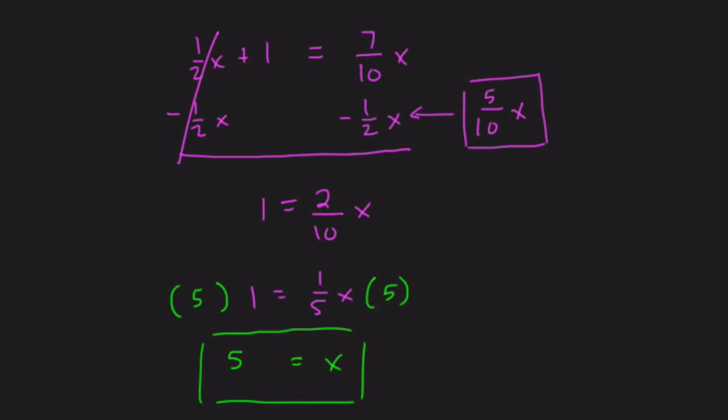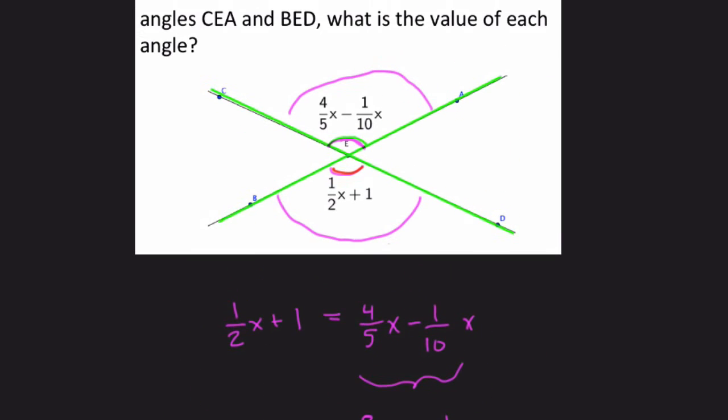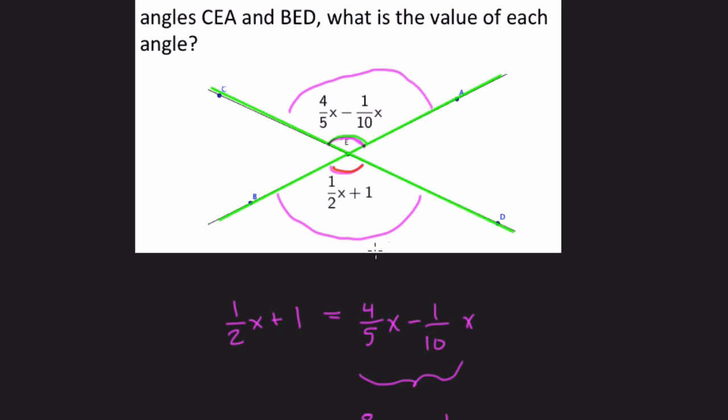So this is the measure of X, but they want the value of the angles. We're going to plug it into my second equation here. It shouldn't matter, they're both equivalent. So we have 1 half of 5 plus 1. So 5 is, 1 half of 5 is 2.5, plus 1 is 3.5. So here we have 3.5 degrees is the measure of each angle, although this is not really a great question.